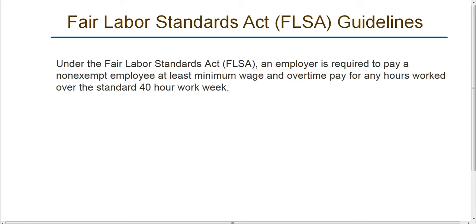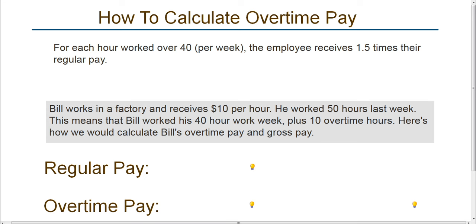If your employee is paid an hourly wage, then they are automatically guaranteed to be paid overtime for any hours worked over 40 per work week. For each hour worked over 40 per week, the employee receives one and a half times their regular pay. These are the federal guidelines. Some states have their own guidelines, and if the state guidelines are higher than the federal guidelines, the employee is entitled to the higher rate.